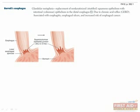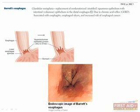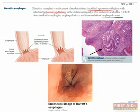Barrett's esophagus deserves its own separate mention because it's such a highly tested topic. It's a classic case of metaplasia when one cell type changes to another in response to its environment. The non-keratinized stratified squamous epithelium of the esophagus is exposed to acid due to GERD, and it undergoes metaplasia to become intestinal-type columnar epithelium to defend itself from the chronic acid load. Here you can see a picture of the metaplastic columnar epithelia as well as the goblet cells, which normally you would only see in the small intestine.